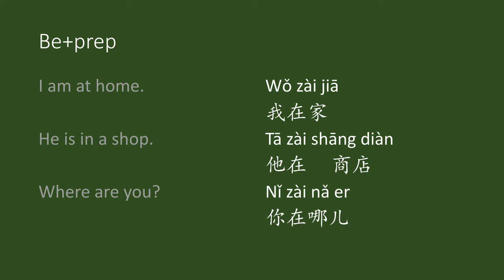zài has another meaning — it means 'be + preposition'. In English, when we say 'I'm at home', we use zài to replace it. 我在家 — home is jiā, wǒ zài jiā.